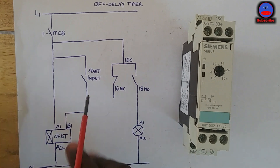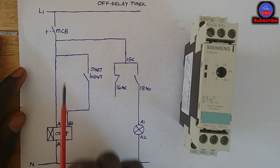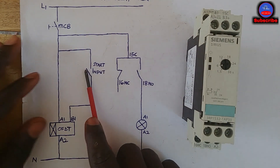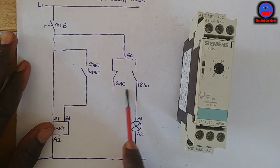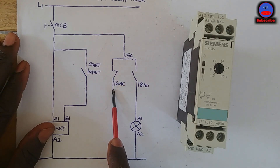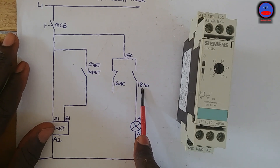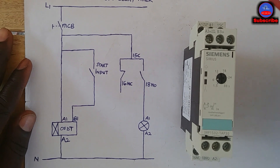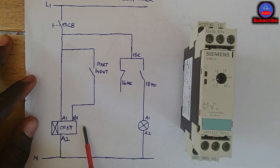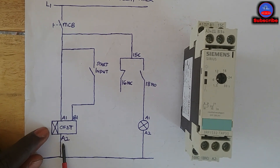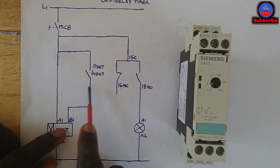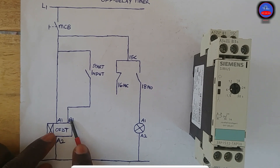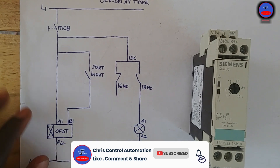In our circuit diagram we have the MCB — the main circuit breaker — the timer coil, the start input switch or push button, the contacts: 15C common, 16NC normally closed, 18NO normally open, and an indicator lamp. We are using the timer on AC so we only need A1 and A2. B1 is the input terminal for AC — I'll explain why it is there when we discuss off delay operation.